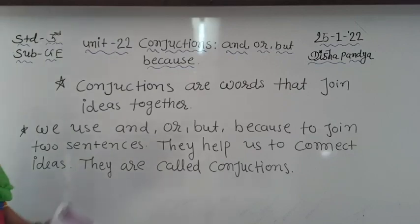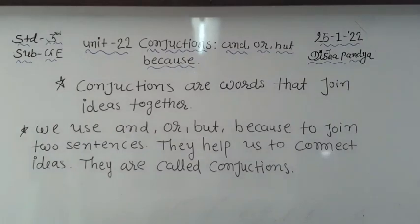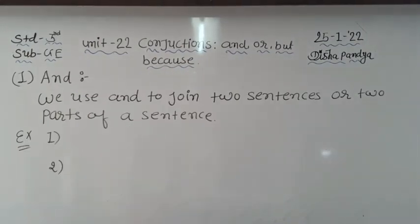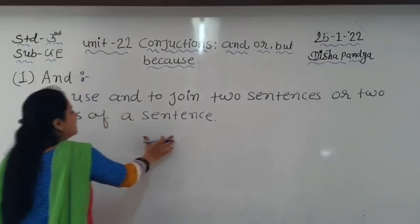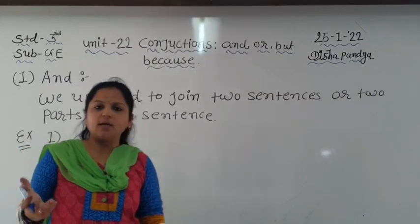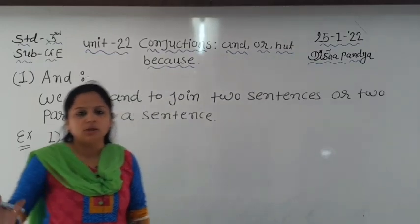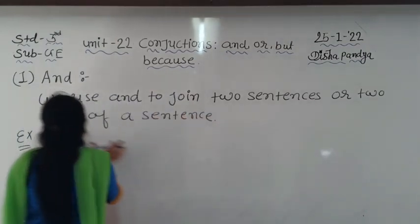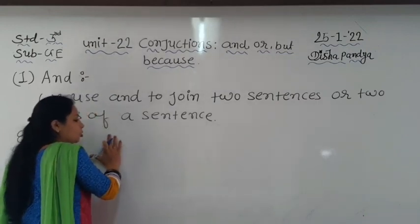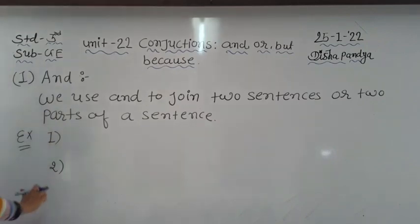Now let's learn how each conjunction works, one by one. We are going to learn about the first conjunction: AND. We use 'and' to join two sentences or two parts of a sentence. अगर एक sentence के meaning को आगे बढ़ाने के लिए दूसरा sentence हो, और दोनों को merge करना हो, तब हम 'and' का use करेंगे।